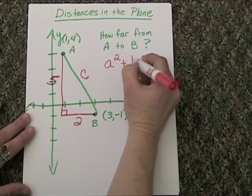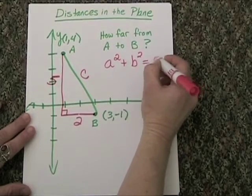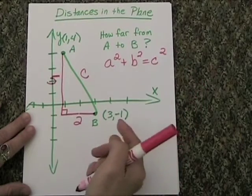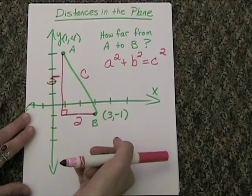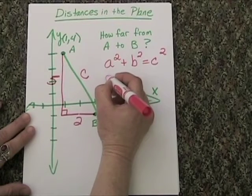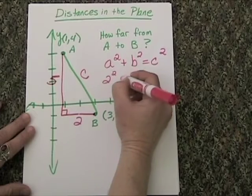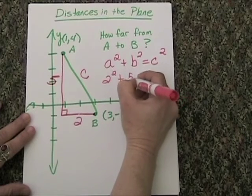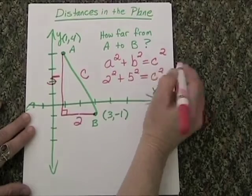A squared plus B squared is always equal to C squared. We've got two legs here of five and two, so let's go ahead and put those in. I'm going to put the two here under the A. It doesn't really matter where I put it, so I'll have 2² + 5² = C².